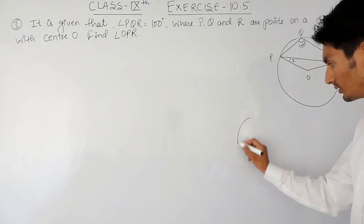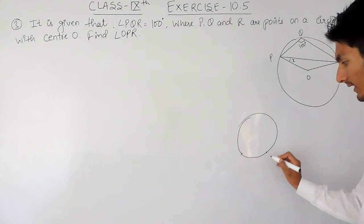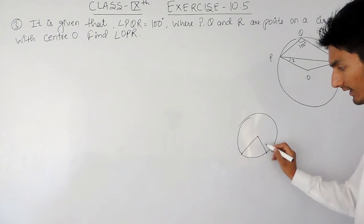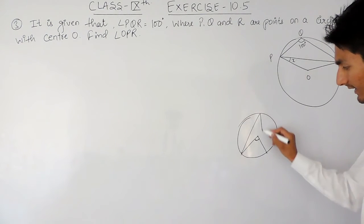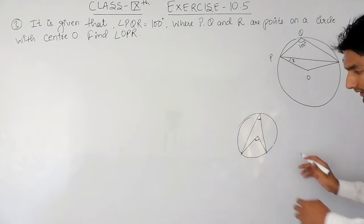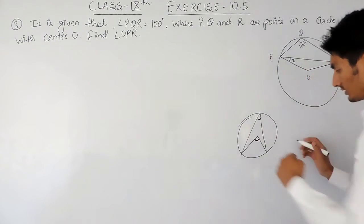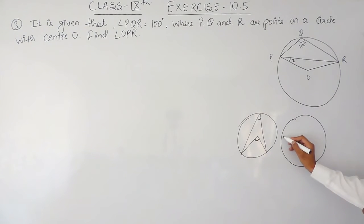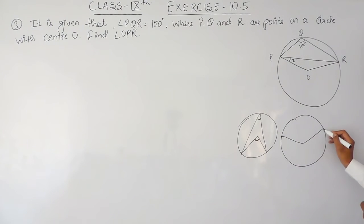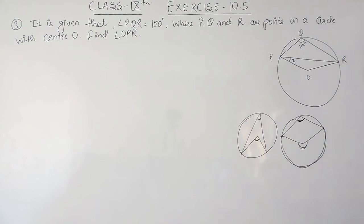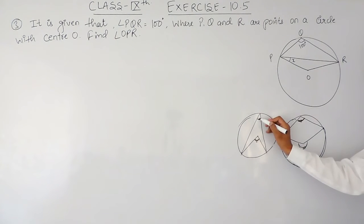First of all, we are going to use a theorem which states that the angle subtended by an arc at the center is twice the angle subtended by it on the remaining part of the circle. If we move these two radii, again the angle subtended by the arc at the center will be twice the angle subtended on the remaining part. So this angle will be twice of this angle, and similarly this angle will be twice of this angle.